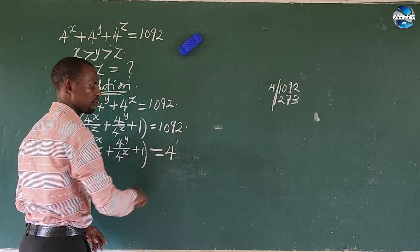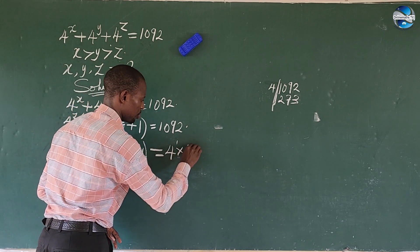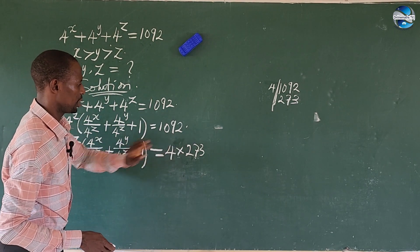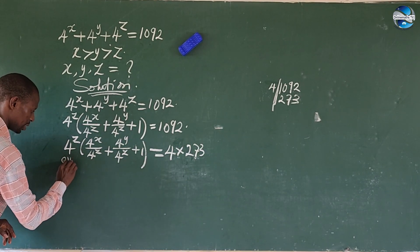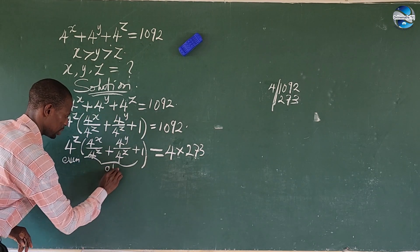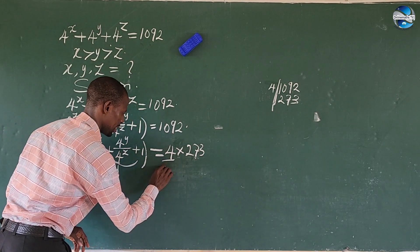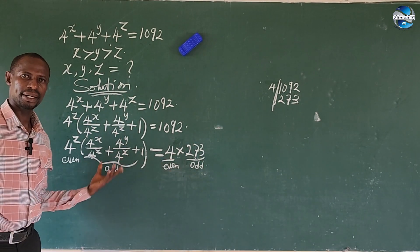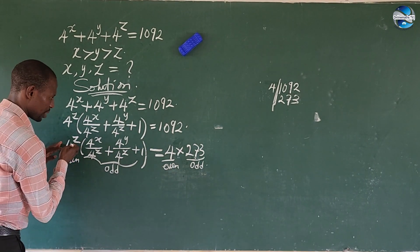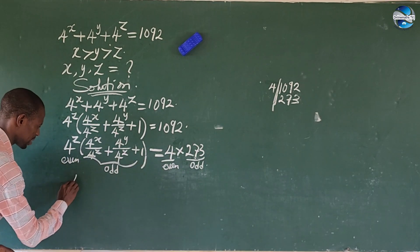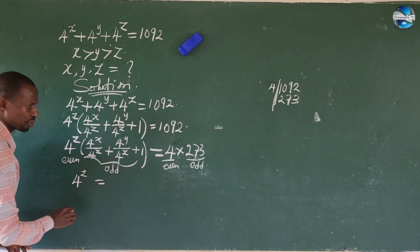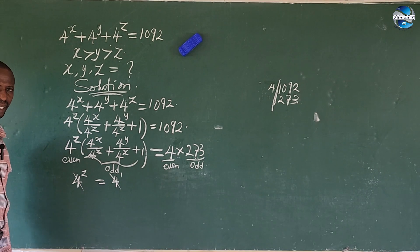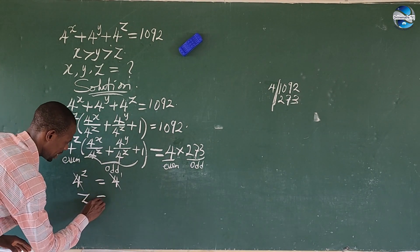So 4 to the power of 1 gives us 4. Now with the even part and the odd part separated, we cannot compare odd and even. That means we equate the even parts together and the odd parts together. This gives us 4 to the power of z equals 4 to the power of 1. Since the bases are the same and we have an equality sign, this automatically gives us z equals 1.